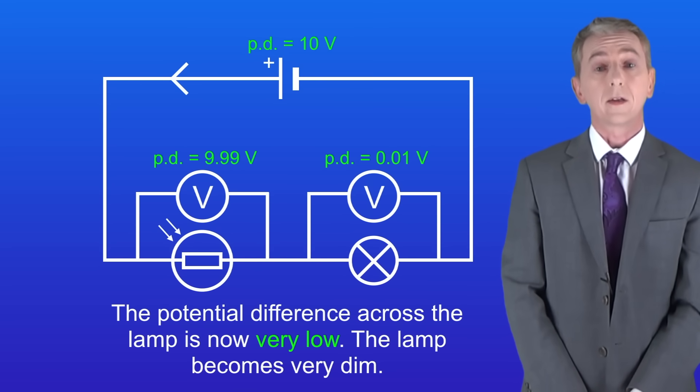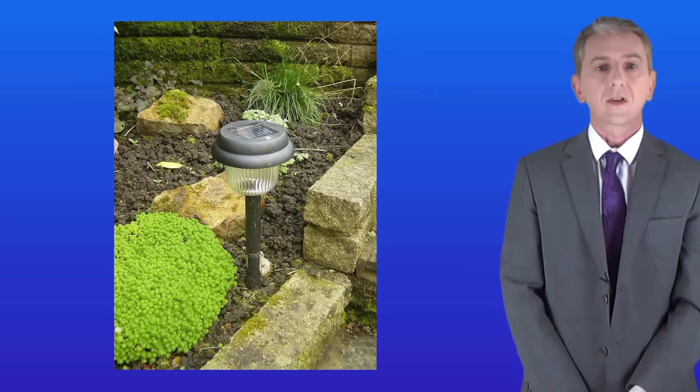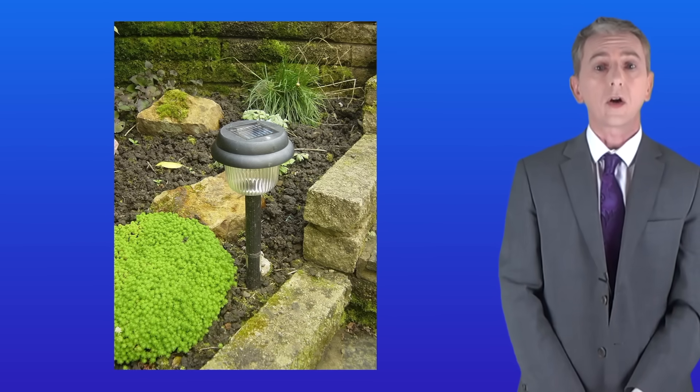Now we can also find LDRs in devices such as these garden lamps. Here the circuit's designed so that the light comes on in the darkness and then goes off again in the light.